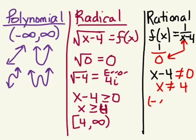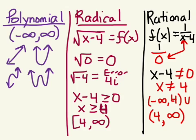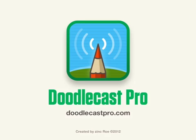So now our domain is from negative infinity to positive 4, and it's a parenthesis because we cannot use 4, union from 4 to positive infinity. So I can use anything I want, I just cannot use the value of 4.